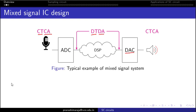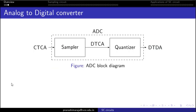The switch capacitor circuit is basically utilized in the ADC block. The ADC performs the conversion of a continuous-time, continuous-amplitude signal to one that is discrete in time and discrete in amplitude.